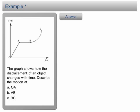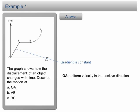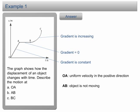Example 1. The graph shows how the displacement of an object changes over time. Describe the motion at OA, AB, and BC. From O to A, the gradient is constant and positive. This shows that the object moves at uniform velocity in the positive direction. From A to B, the gradient is 0, meaning the velocity is 0 — the object is stationary. From B to C, the gradient increases over time and is still positive, showing that the object is moving in the same direction at an increasing speed.